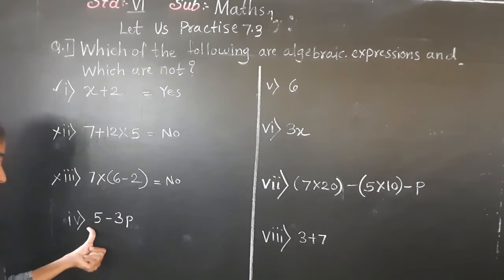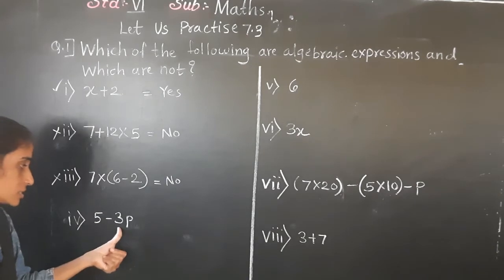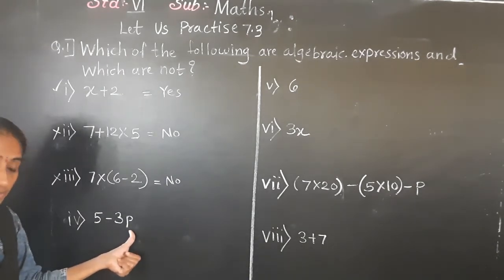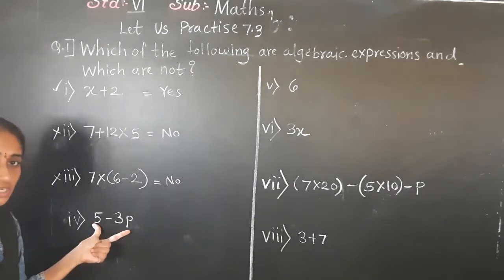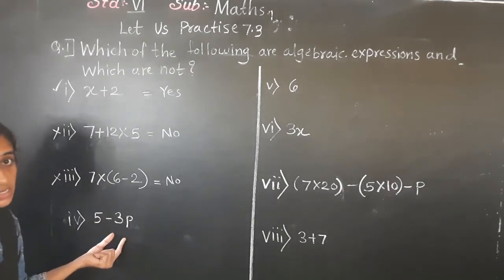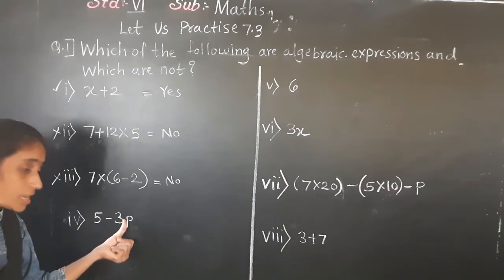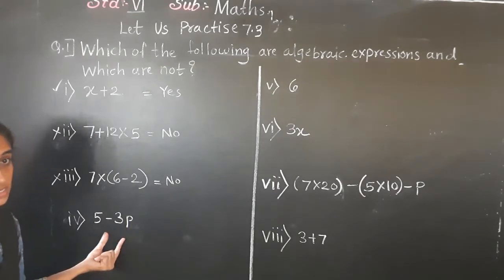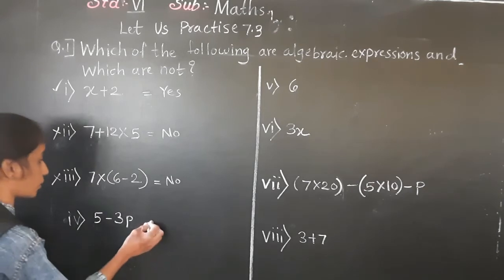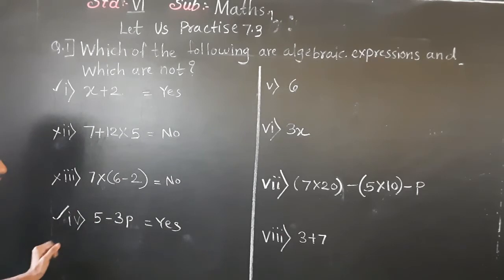The fourth example: 5 minus 3p. Constant is given, variable is given, and basic operations — subtraction and multiplication (3p means 3 times p) — are also given. So this is an algebraic expression.